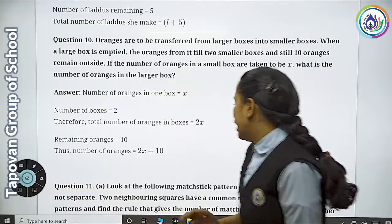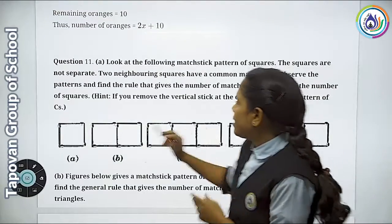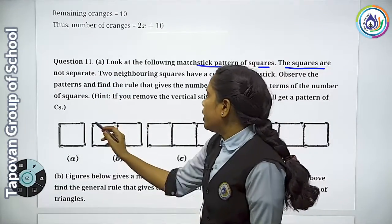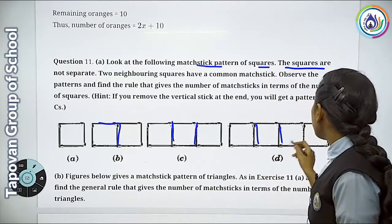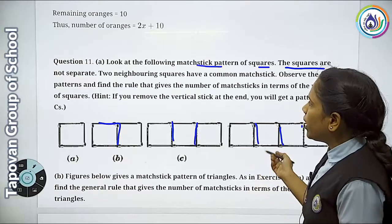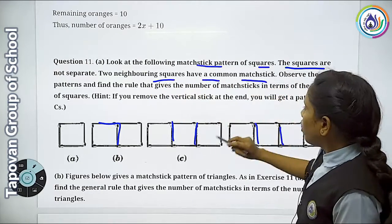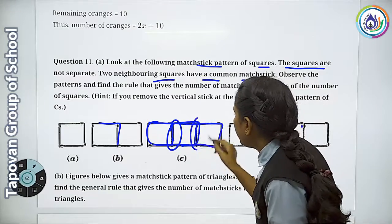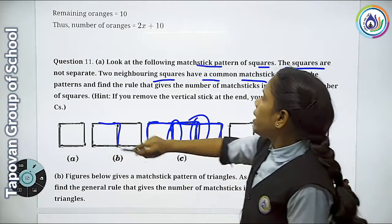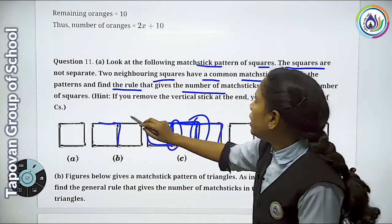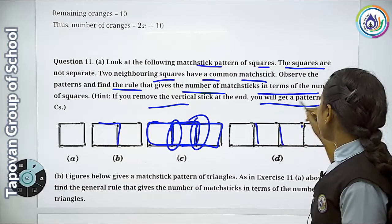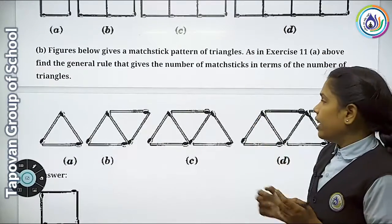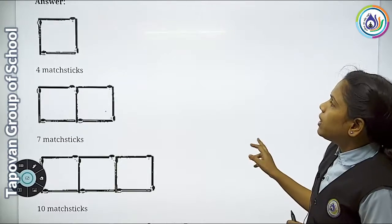Now let's talk about Question Number 11. We will look at the matchstick pattern using squares. The squares are not separate from each other — they are all linked. Two neighboring squares share a common matchstick. So you follow this pattern and count the matchsticks. You can make the pattern with triangles or squares and tell how many matchsticks are used.